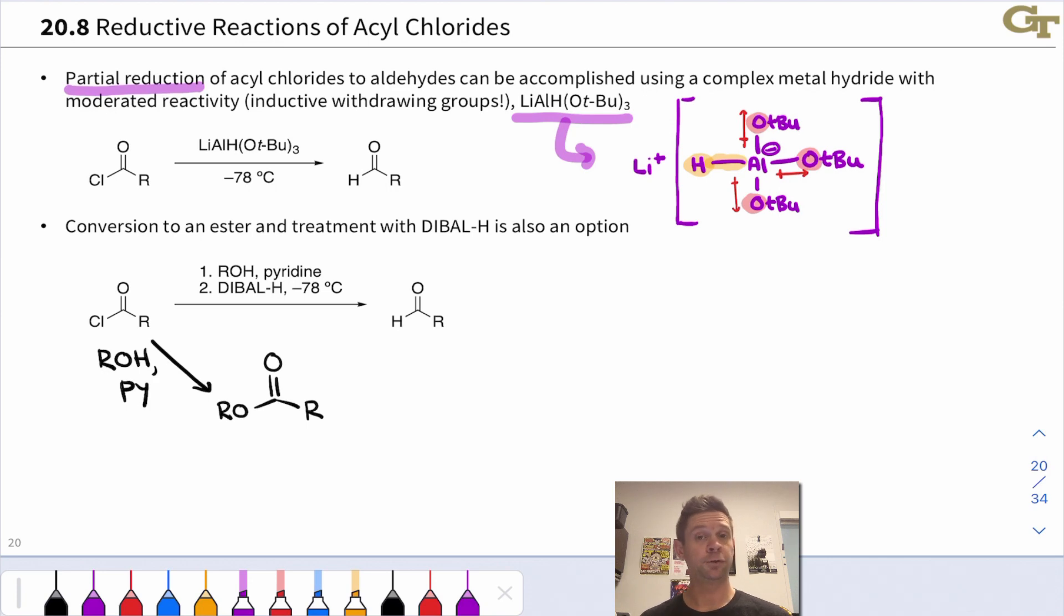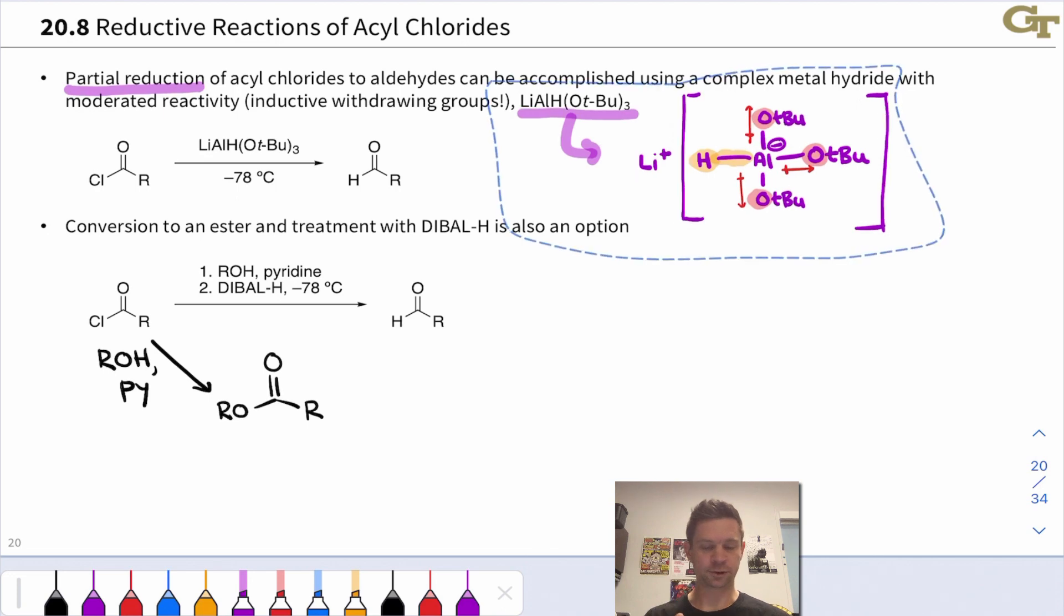That's one option for converting an acyl chloride into an aldehyde. Another option involves conversion of the acyl chloride into an ester and then treatment with DIBAL-H which is a reagent that can partially reduce an ester to an aldehyde. So treatment of the acyl chloride with the alcohol and pyridine we saw that previously as a nucleophilic acyl substitution reaction that converts the acyl chloride into an ester and then we can treat the ester with DIBAL-H and this leads to the aldehyde product. The reaction stops at the aldehyde stage, there's not a second addition of hydride here.